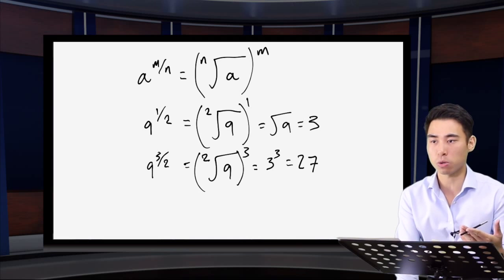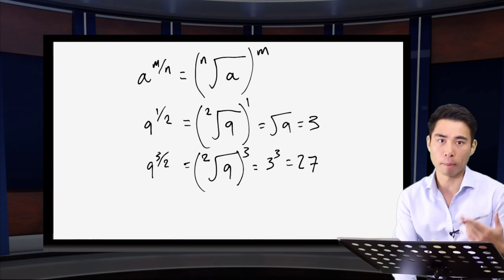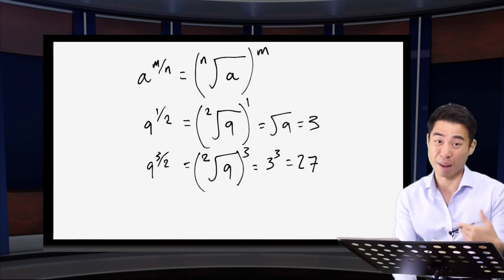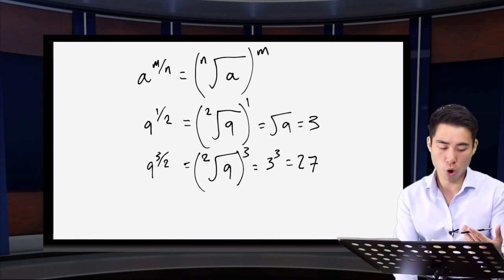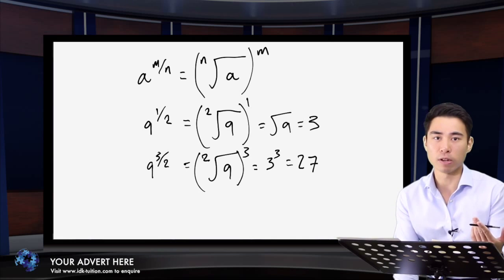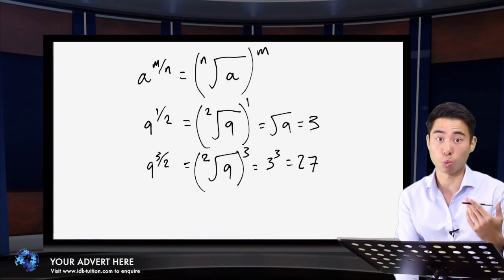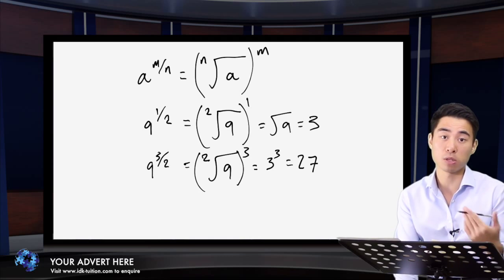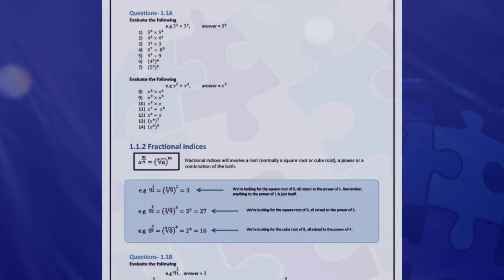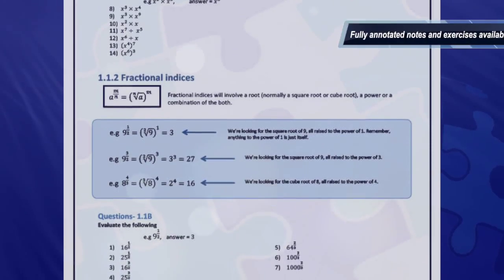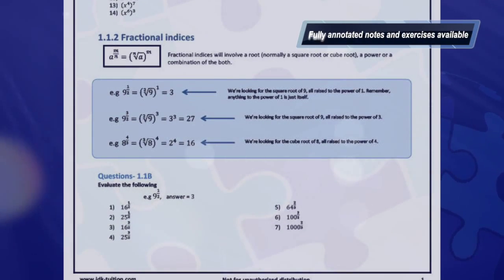Cube numbers aren't particularly difficult. The biggest cube number you'll look at is 1000, which is 10 times 10 times 10. These numbers will stick in your head as you go through exercises. So that's nine raised to the power of three over two. Let's look at one more example to see whether it's stuck.